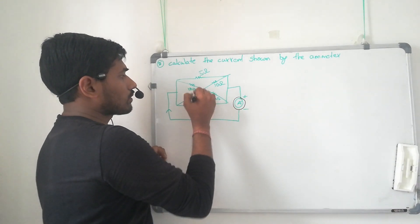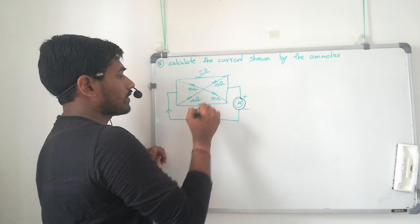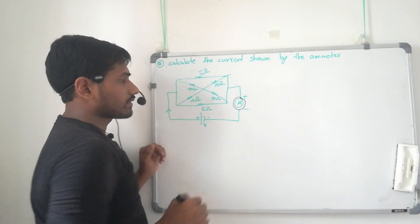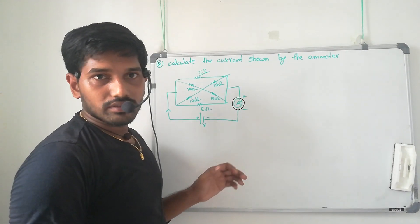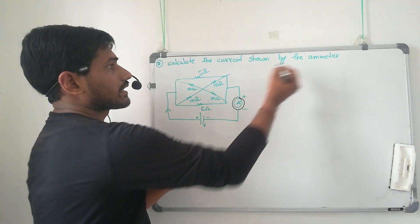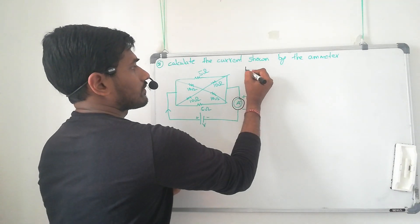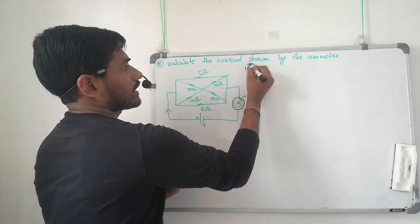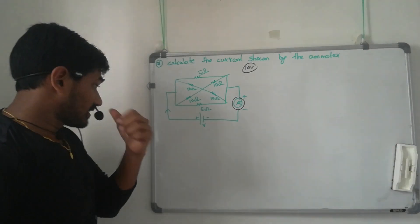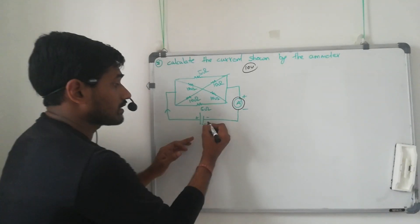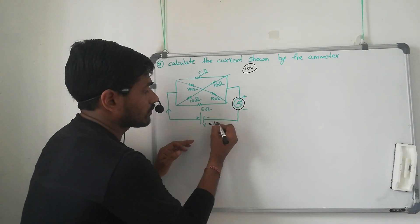The circuit has resistors of 10 ohm, 10 ohm, 10 ohm, 5 ohm, and 5 ohm. Voltage is given as mentioned in the problem itself — for example, 10 volts. So here the voltage given is 10 volts.